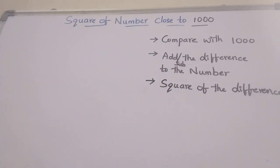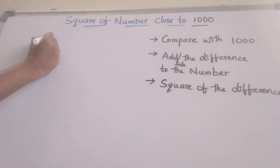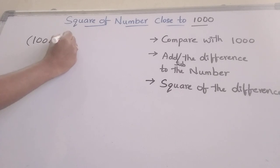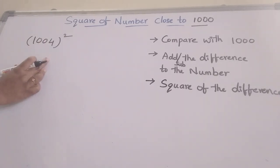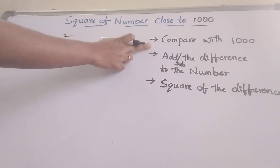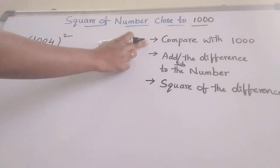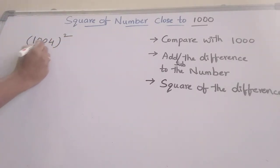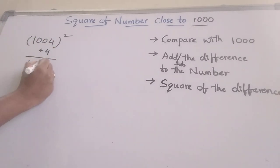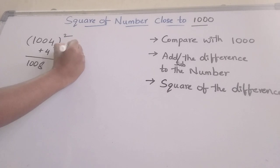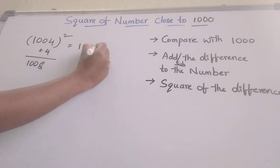First let's go with one example: find the square of 1004. First, compare with 1000. What is the difference? Compared with 1000, we have plus 4. Write plus 4 here, and we can add this 4 to this number — that should be 1008. Write 1008 here.